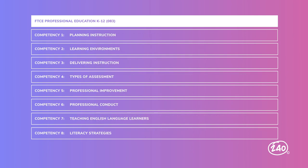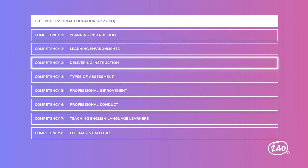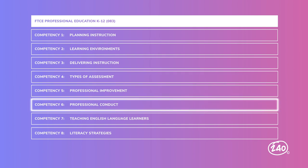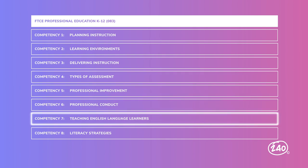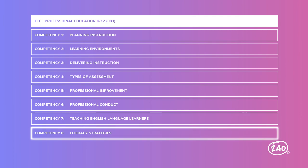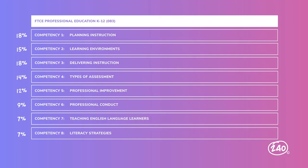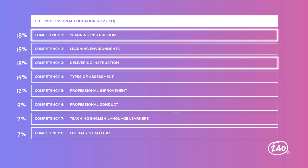This exam covers planning instruction, learning environments, delivering instruction, types of assessment, professional improvement, professional conduct, teaching English language learners, and literacy strategies. The test is approximately 100 multiple choice questions in all, and each competency is worth between 7% and 18% of the exam. For each competency, let's discuss one thing that you have to know, starting with the competencies worth the largest percentage of the exam.